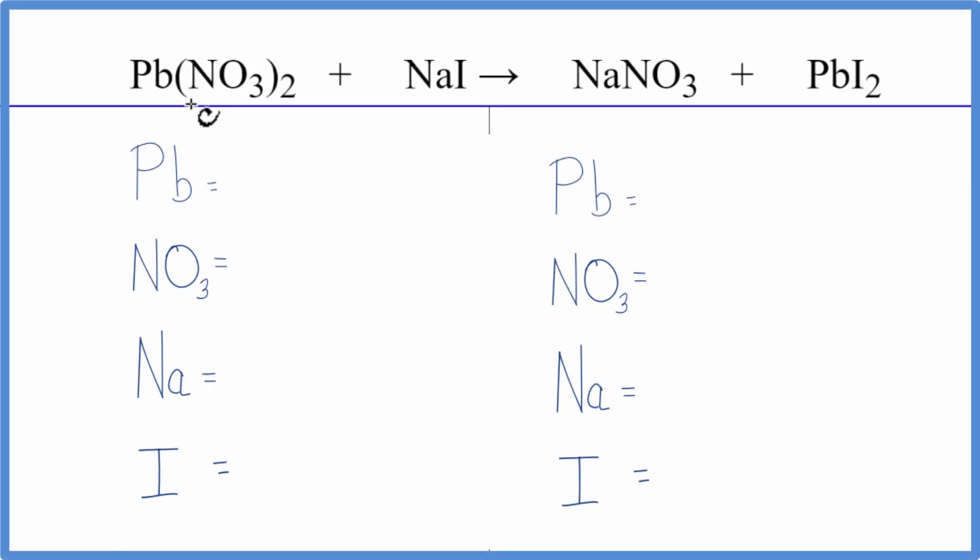In this reaction we have lead nitrate and sodium iodide. This is a double displacement reaction where the lead and sodium switch places. We'll use a trick here to deal with NO3. Since we have NO3 here and here, we're going to count that as one thing.